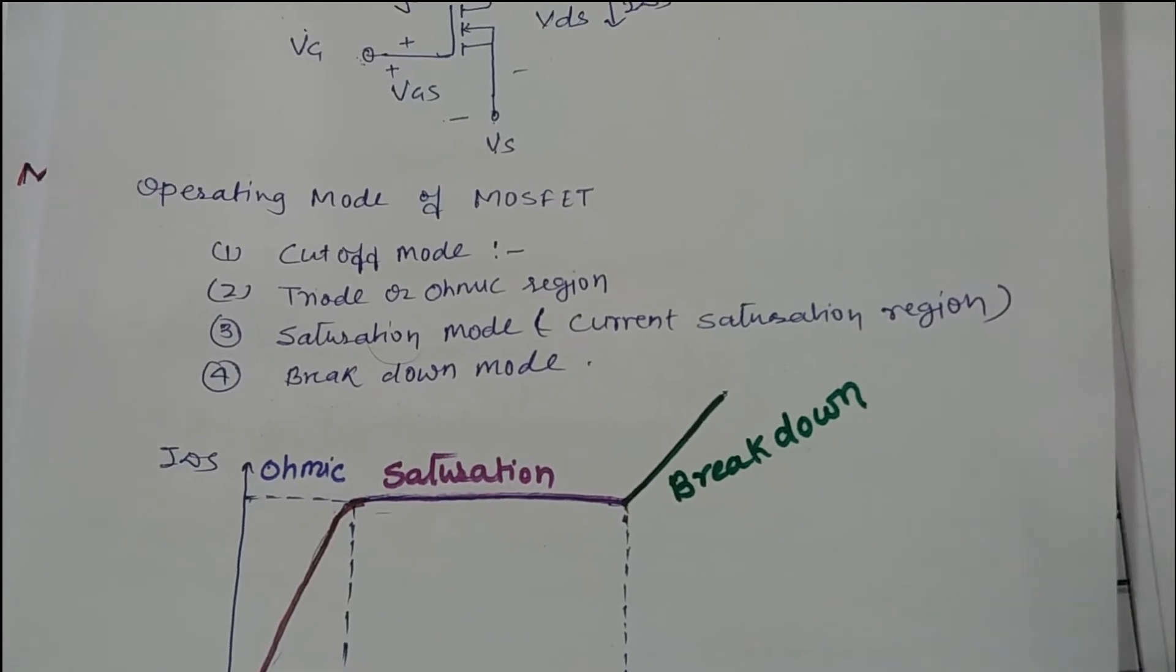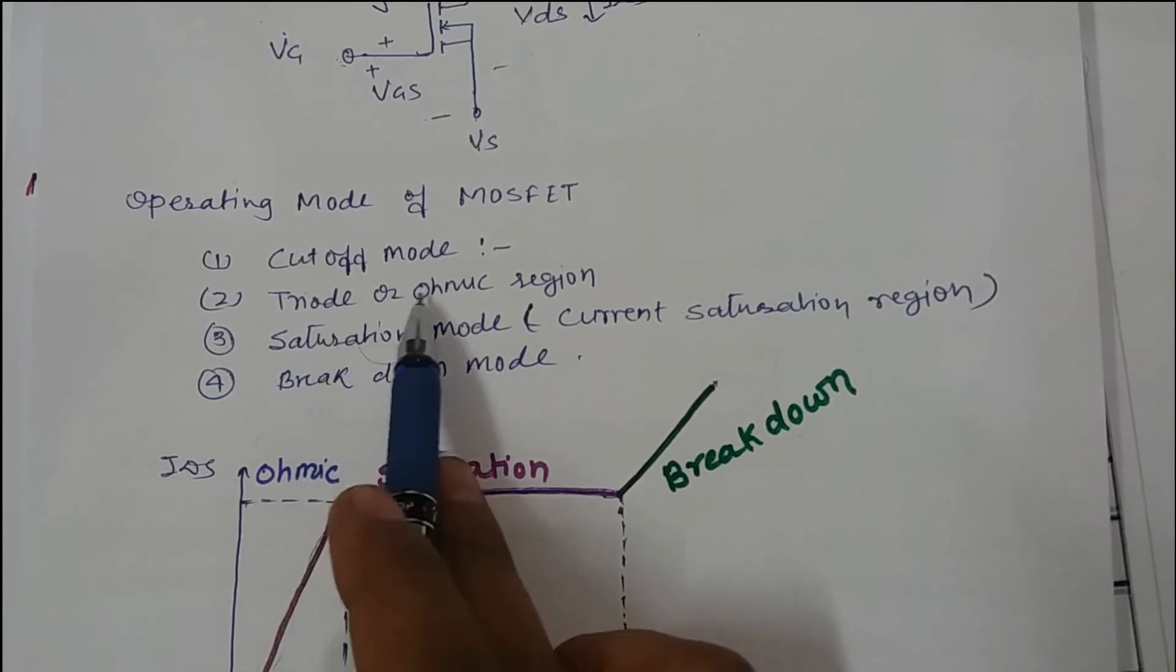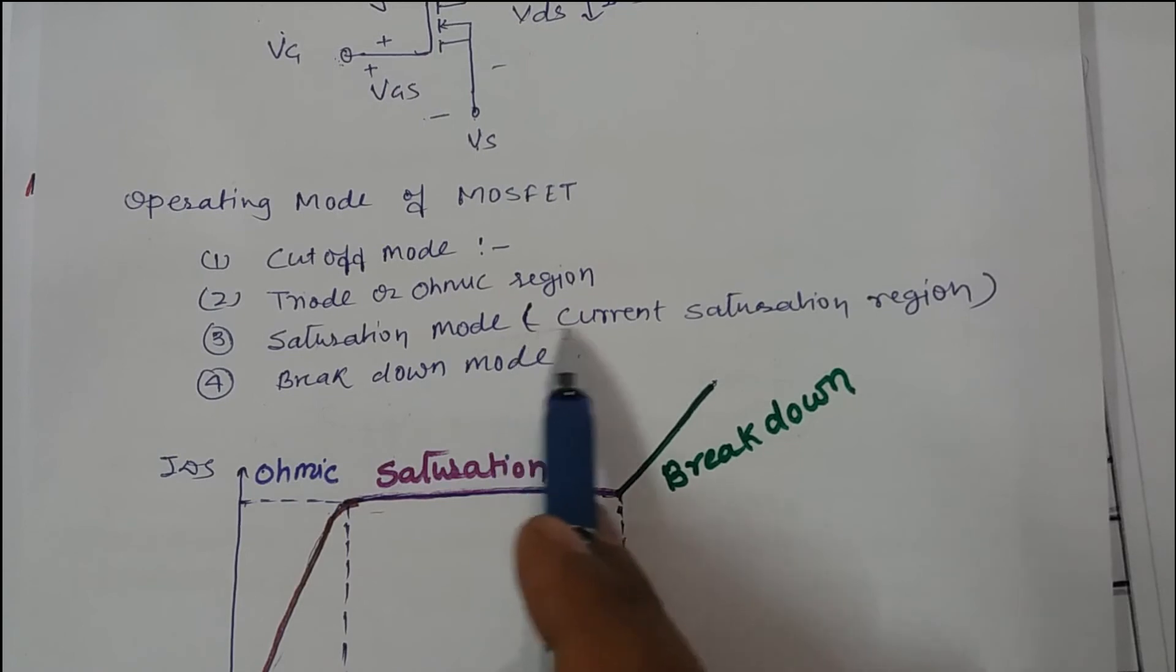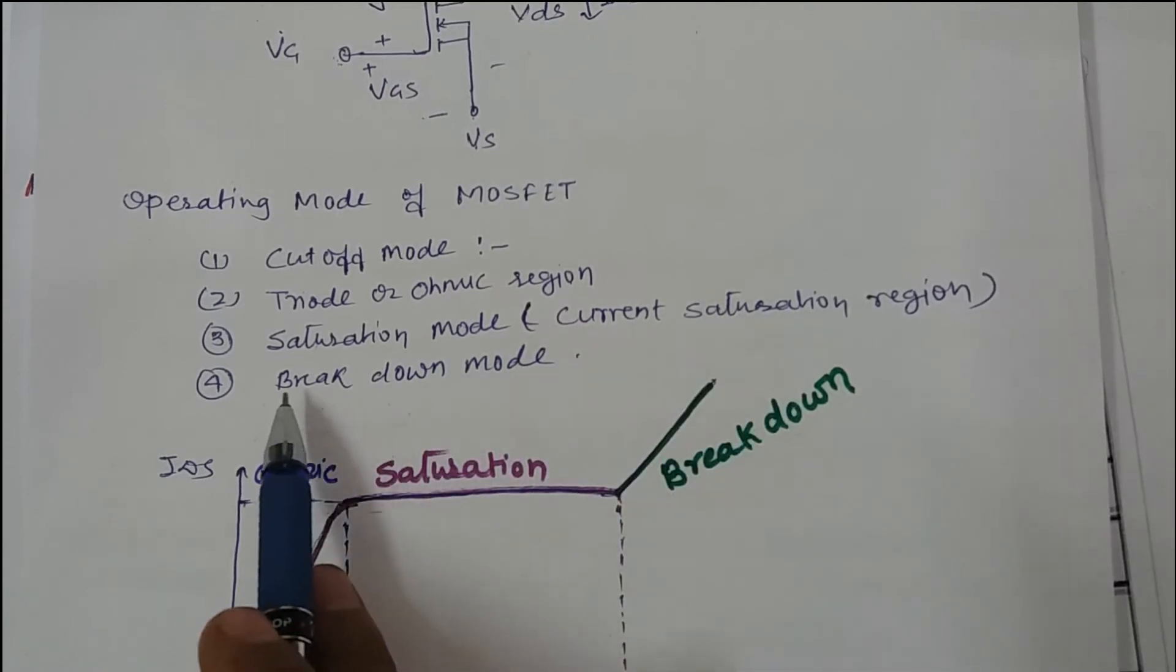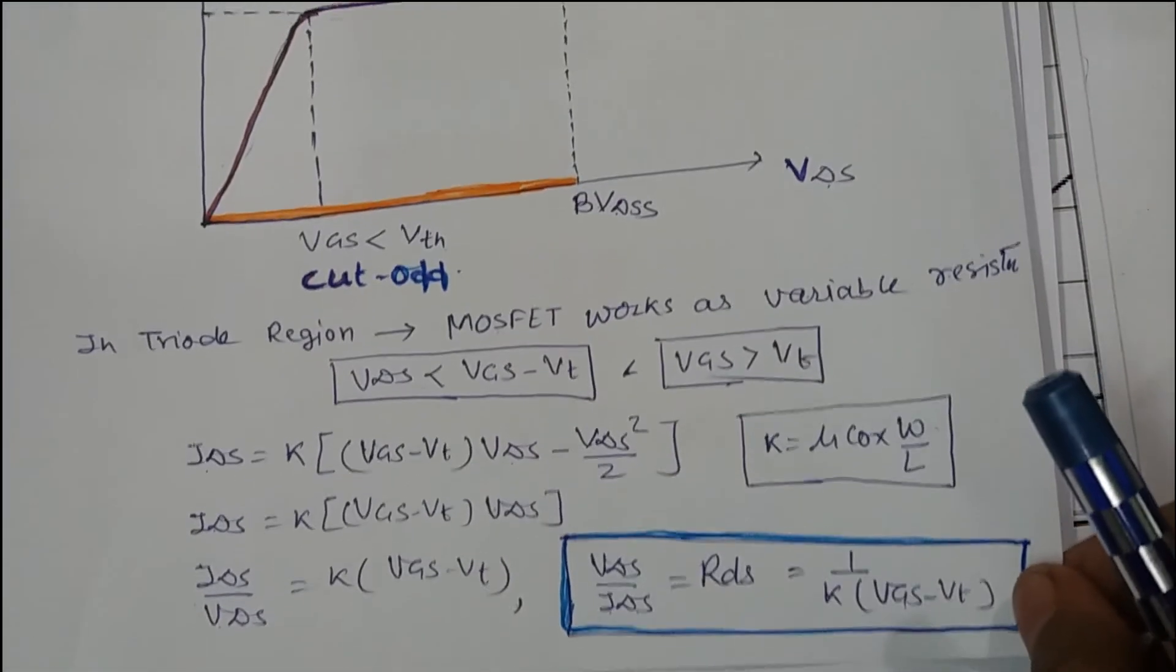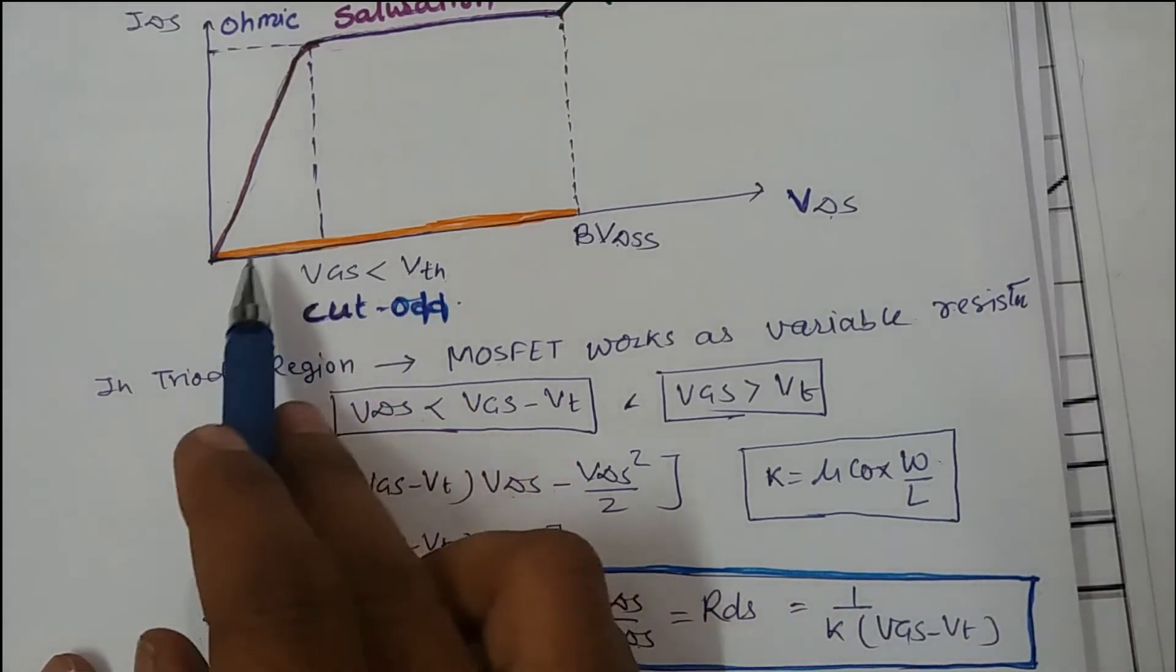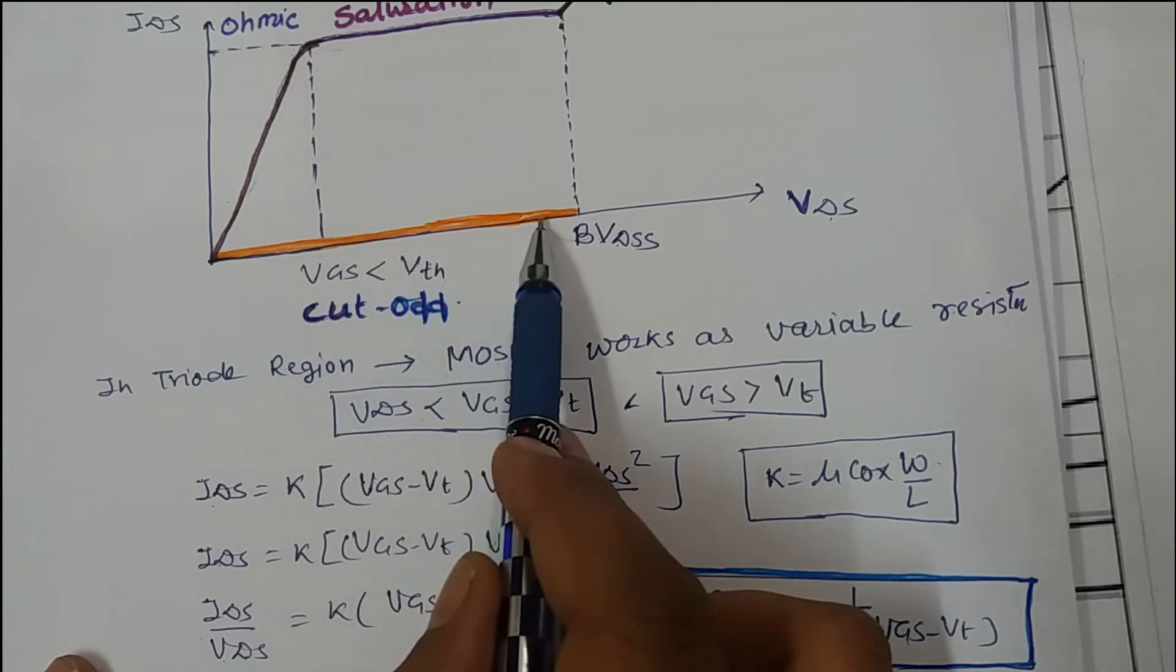So let's talk about the operating modes of MOSFET. There is cutoff mode, there is triode or ohmic region, there is saturation region, also called current saturation region, and fourth one is breakdown region. Now, if VGS is less than VT, MOSFET is in cutoff region. There is no channel formation and there is no current flowing through it, so MOSFET is in cutoff region.